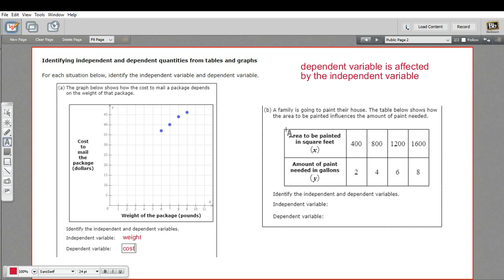Let's look at the second one. It says a family is going to paint their house. The table below shows how the area to be painted influences the amount of paint needed. And there, they've just told you the answer.